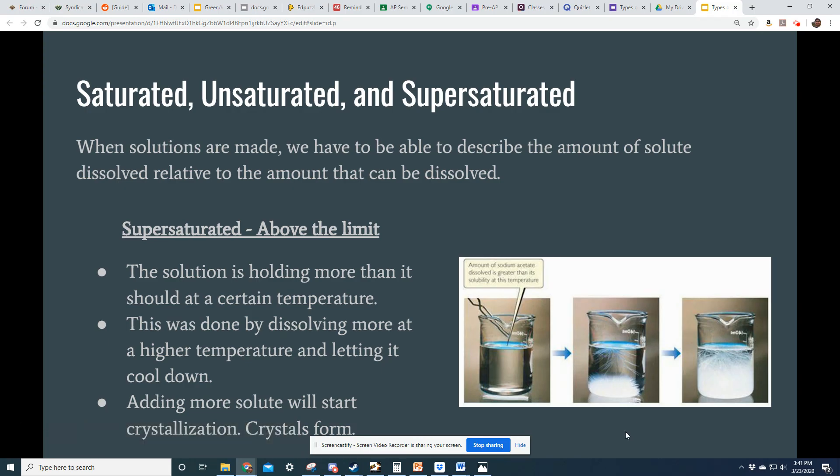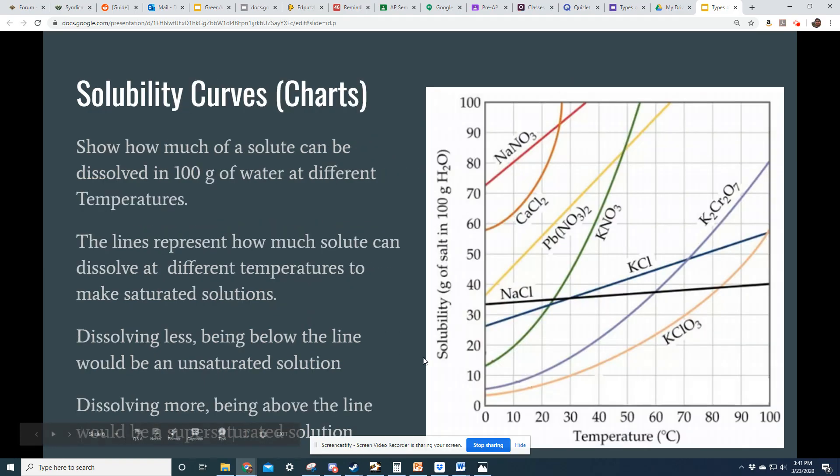So these three terms describe how much of a solute there is relative to the amount that I can dissolve. Now, scientists have been doing this for a very long time and they've developed these solubility curves or solubility charts, which show us how much of a solute should be able to be dissolved at different temperatures. To keep things constant, we compare everything to 100 grams of water.